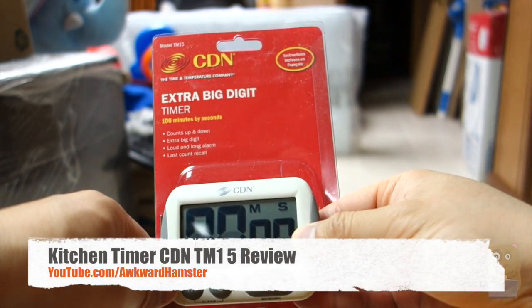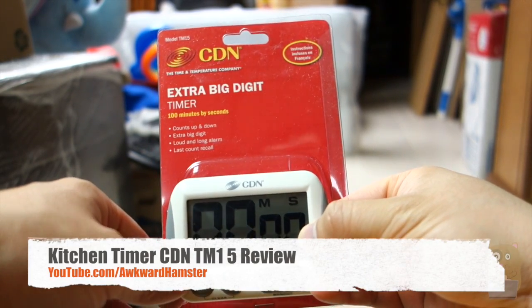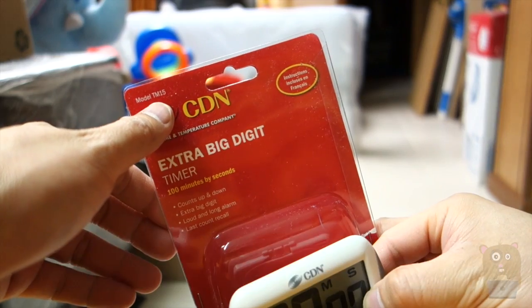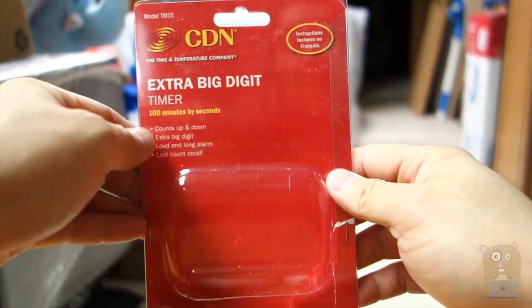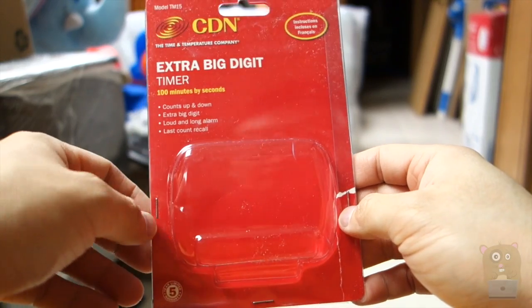Hi, welcome to Elgramster. Today I'll be reviewing this digital timer, kitchen timer by CDN. The model is TM15 and I got it from Amazon.com because they advertise a large display and also a loud alarm.